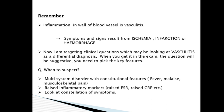I am targeting clinical questions which may be looking at vasculitis as a differential diagnosis. When you get it in the exam the question will be suggested; you need to pick the key features. When to suspect? Multi-system disorder with constitutional features — fever, malaise, musculoskeletal pain. These could be early hints. Raised inflammatory markers: raised ESR, raised CRP. Then look at the constellation of symptoms.